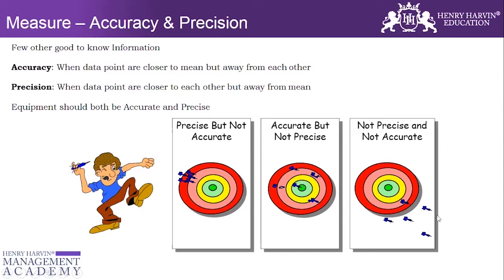The third case is neither precise nor accurate — the data points are very far away from the mean and very far away from each other. However, we should always ensure that the process or equipment we are measuring is both accurate and precise.